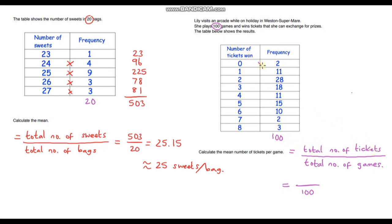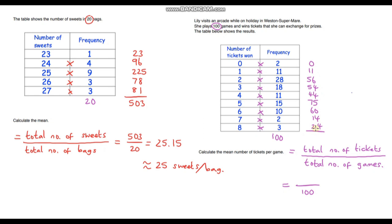We multiply the number of tickets by the frequency for each row: zero times 2 is 0; 1 times 11 is 11; 2 times 28 is 56; 3 times 18 is 54; 4 times 11 is 44; 5 times 15 is 75; 6 times 10 is 60; 7 times 2 is 14; and 8 times 3 is 24. Adding all of those up in my calculator gives a grand total of 326.